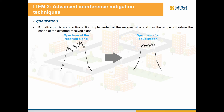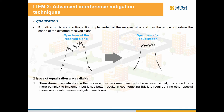Equalization is the next weapon in fighting against interferences. This is a corrective action implemented at the receiver side, and has the scope to restore the shape of the distorted received signal, as we can see in the picture. This operation can be performed in the time domain, meaning that the processing is performed on the actual signal, not on its spectrum. This type of equalization is complex to implement, but it is more efficient in counteracting inter-symbol interference and other fading related problems.